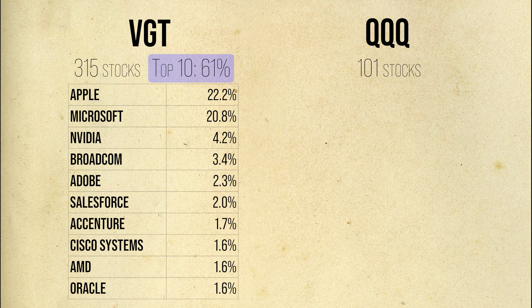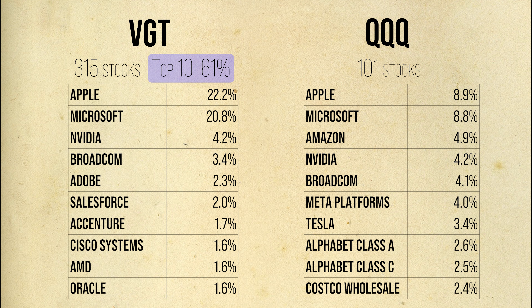Conversely, QQQ has 101 stocks in its portfolio, including two classes of Google stock — that is more than three times fewer holdings than VGT. And yet, QQQ has a much lower concentration at the top compared to VGT. Apple and Microsoft account for only 18%, and QQQ's top 10 holdings take up 46% of its assets. In some sense, QQQ looks more diversified compared to VGT.